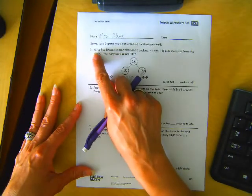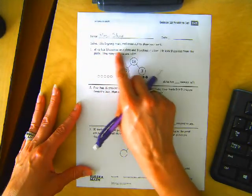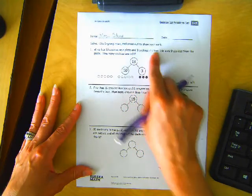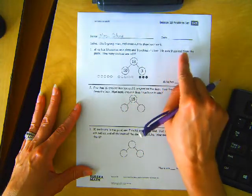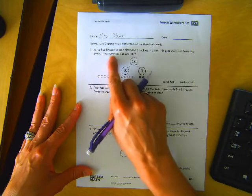Number one. Mike has ten cookies on a plate and three cookies in a box. He eats nine cookies from the plate. How many cookies are left?